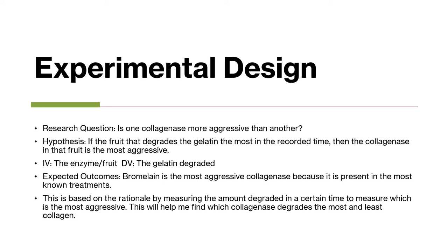The research question for my project is: is one collagenase more aggressive than another? My hypothesis was that the fruit that degrades the gelatin the most in the recorded time is the most aggressive collagenase. The independent variable is the enzyme/fruit and the dependent variable is the amount of gelatin degraded. My expected outcome was that bromelain would be the most aggressive collagenase, as I found the most information and research about it. By measuring the amount degraded in a certain time, I could determine which is the most aggressive.